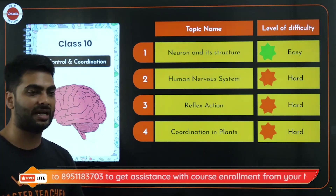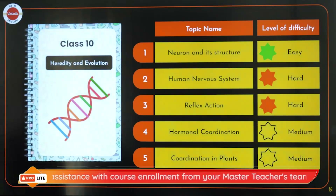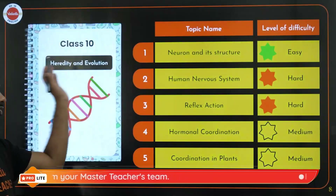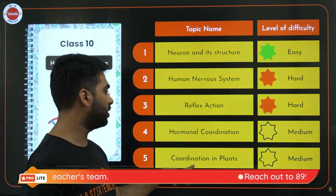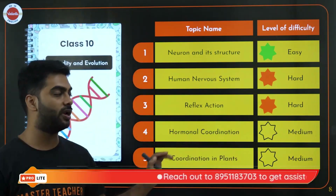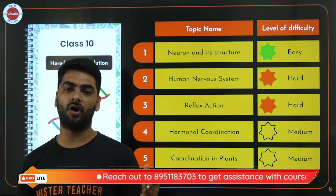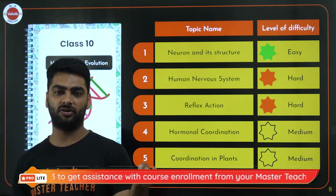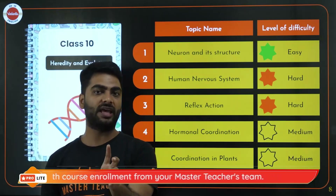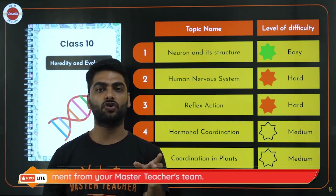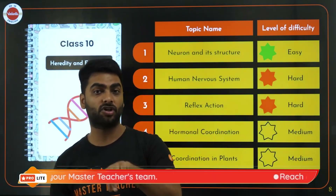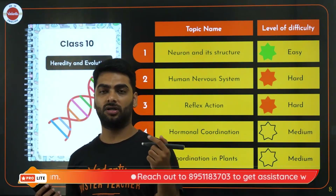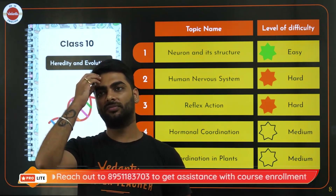Under Heredity and Evolution, definitions are very important — what is a gene, what is a phenotype, what is a genotype. Mendel's laws of inheritance hold a lot of value, along with genotype ratio, phenotype ratio, monohybrid cross, and dihybrid cross. You also have evolution, Darwinism, survival of the fittest, mutation, genetic drift, and gene pool — all technical terms.